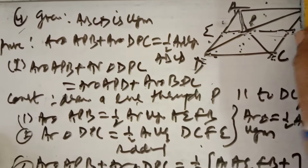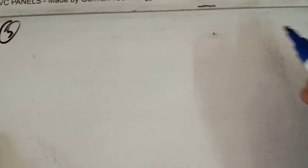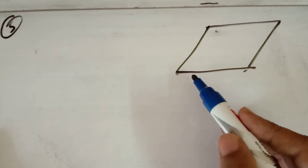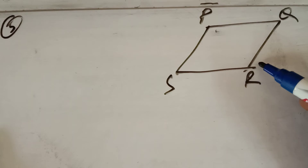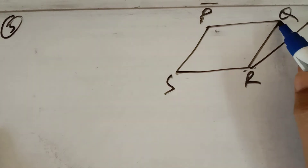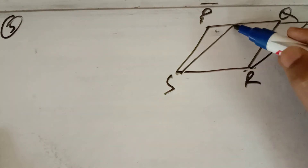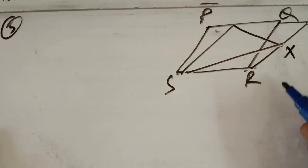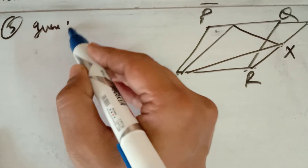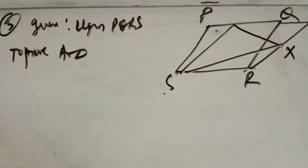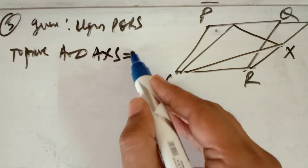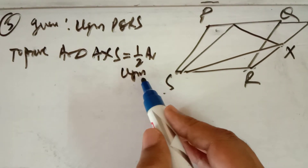Question number 5 is somewhat easier than question 4. There is a parallelogram PQRS and a triangle is made on point X. You have to prove: first, that the area of triangle AXS is equal to half the area of parallelogram PQRS; and second, that the area of parallelogram ABRS equals the area of parallelogram PQRS.